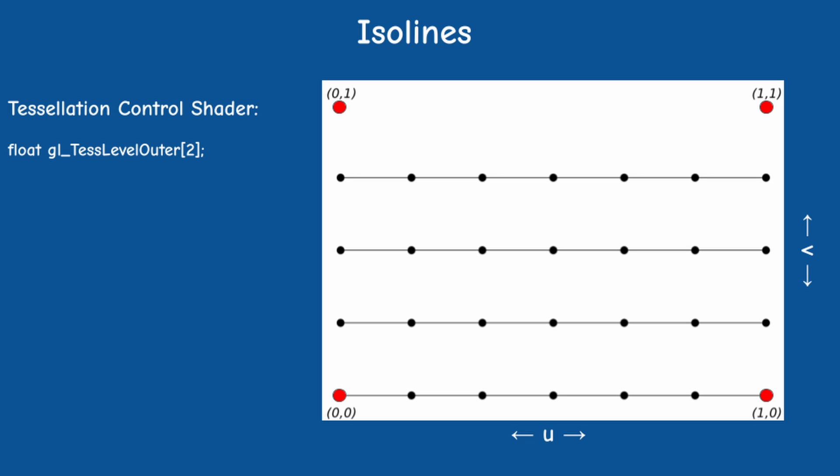There are two tessellation levels here which are accessible in the TCS using the two elements of the gl_TessLevelOuter array. The first element sets the number of lines. If we have a single line then it is on V equals to 0. If we have two lines we have an extra line at V equals 0.5. In general if we have n lines then the following lines are created and as you can see we never reach V equals to 1. The second tessellation level sets the number of segments along each line. The segments are equal in length and as you can see they are very easy to calculate.